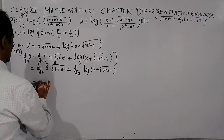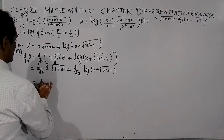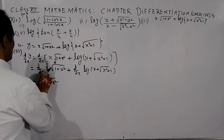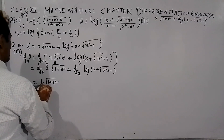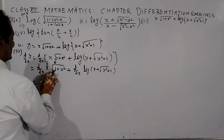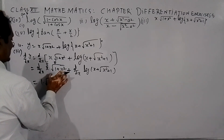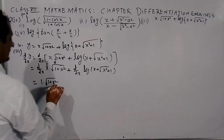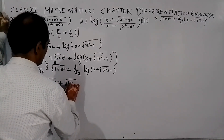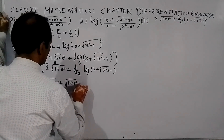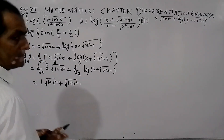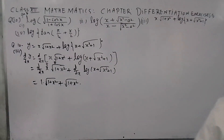So, differentiation of the first function is 1, into rest of the second function, root 1 plus x square, where x differentiates to 1. Then, rest of the first function x, into differentiation of the second function, root 1 plus x square, which gives 2x upon 2 root 1 plus x square.